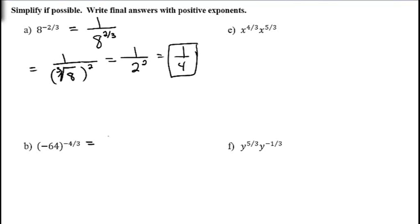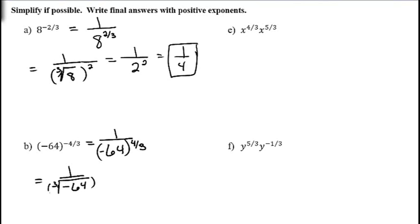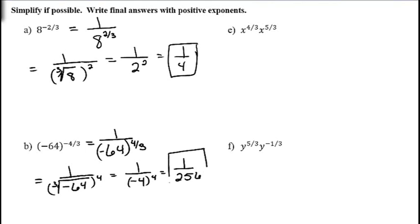For negative 64 raised to the negative 4/3: handle the negative exponent to get 1 over negative 64 to the positive 4/3. Take the cube root first: cube root of negative 64 is negative 4. Then raise to the fourth power: negative 4 to the fourth is positive 256. The result is 1/256.